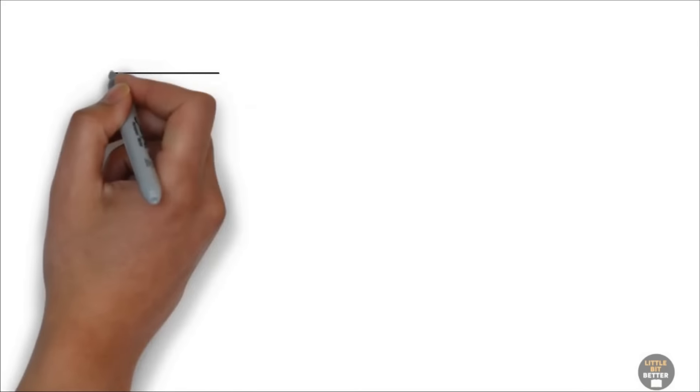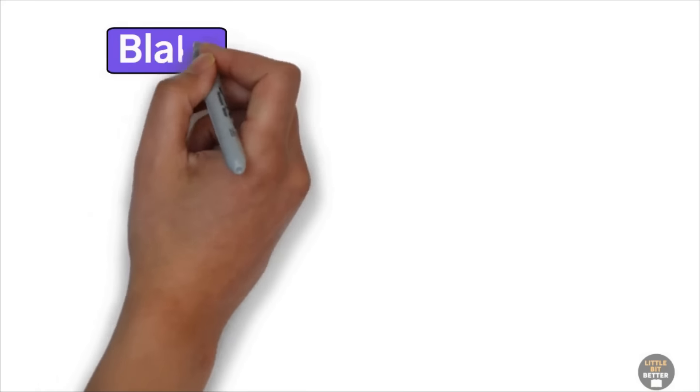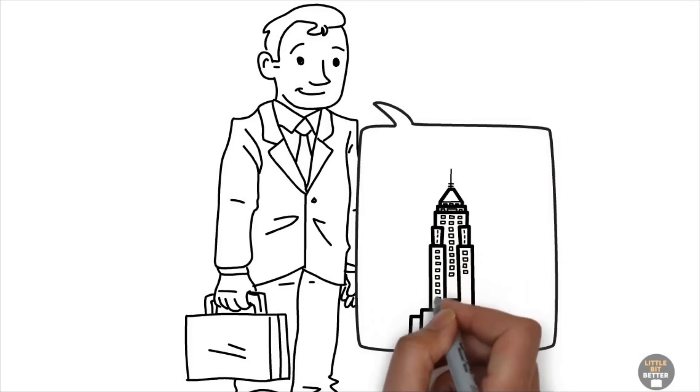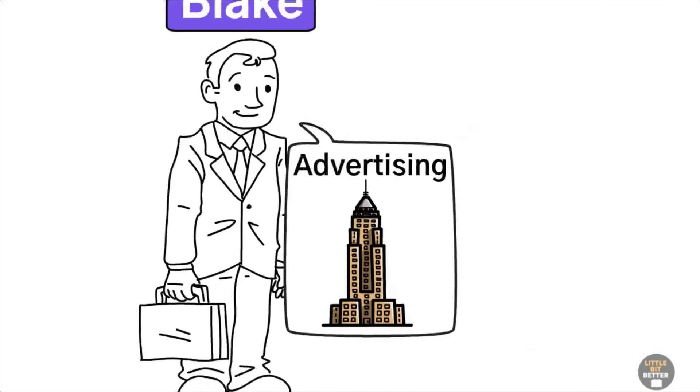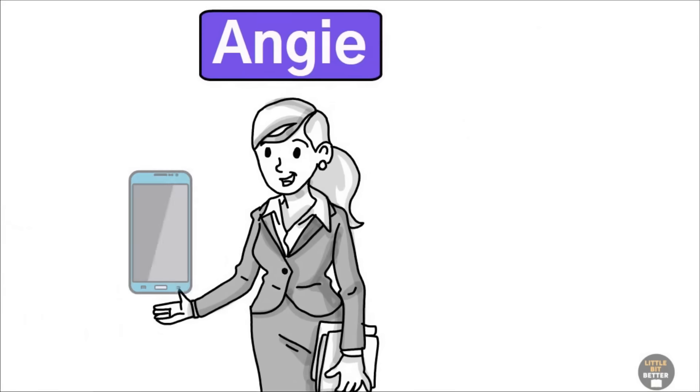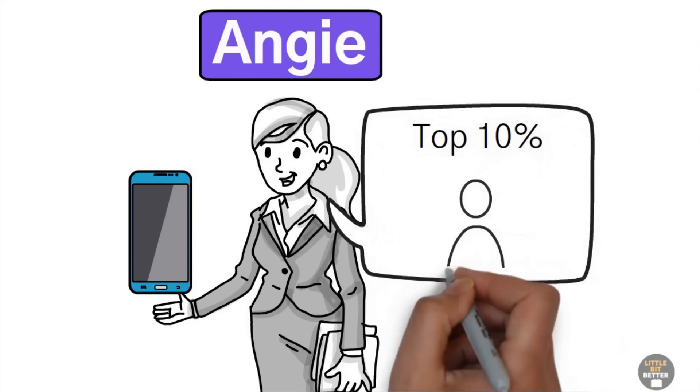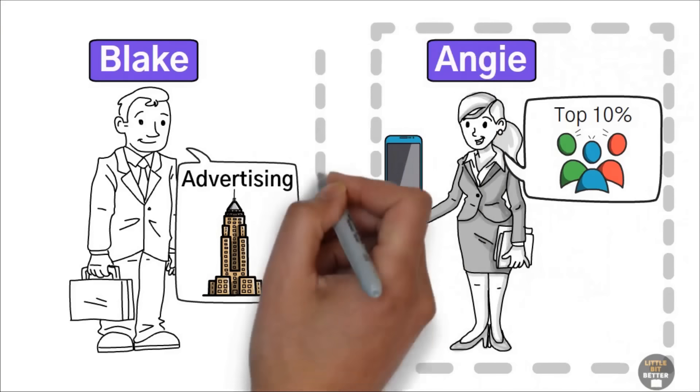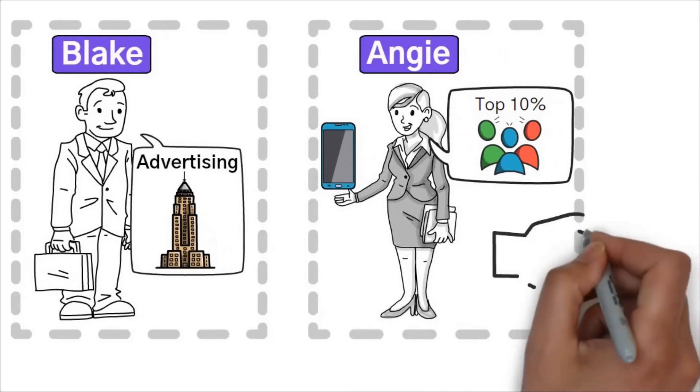Alex interviewed two prospective sales reps. The first one was Blake. He had attended a prestigious university and for the past two years worked at a big advertising agency. He also interviewed Angie. Angie had been a top salesperson selling mobile phones. She reached the top 10% of sales reps nationally. The next time he met with Ted, he described these two candidates. Ted recommended that he hire Angie.